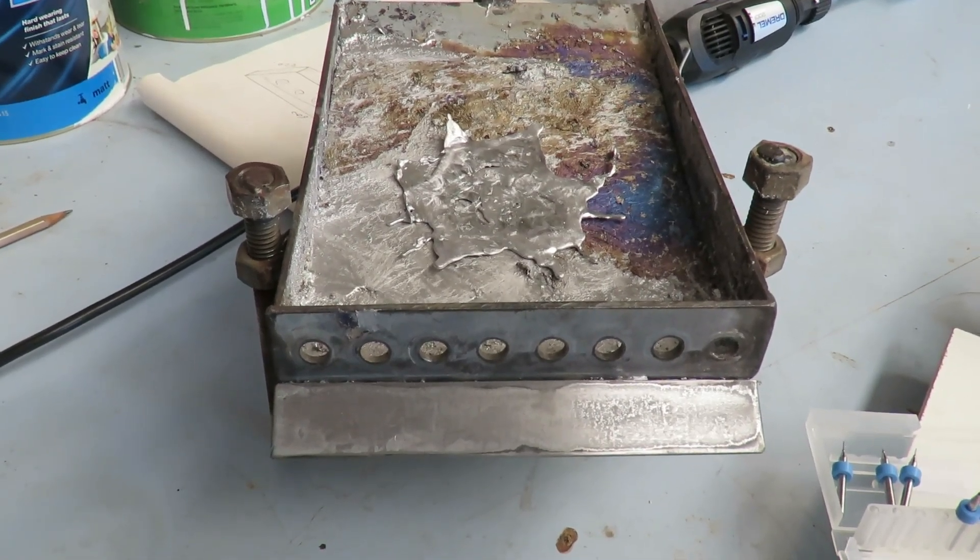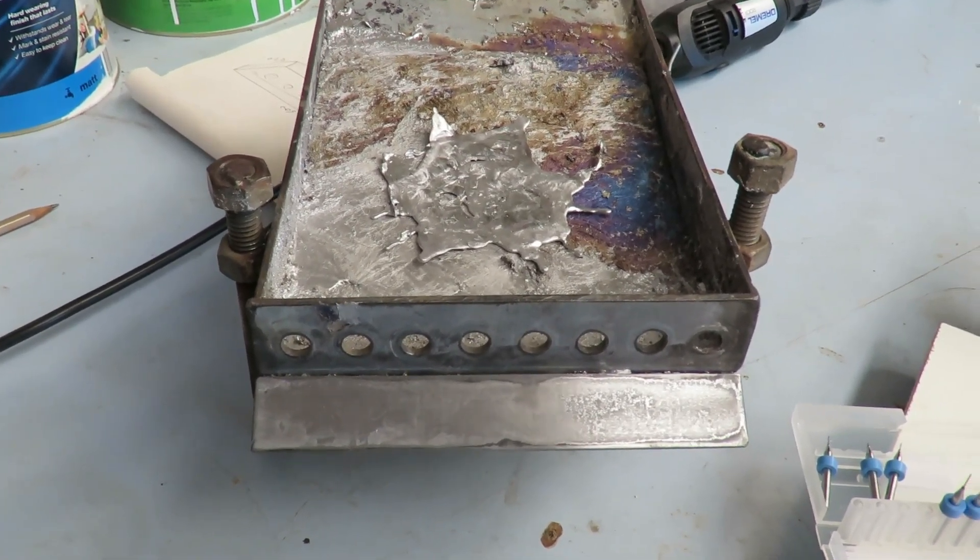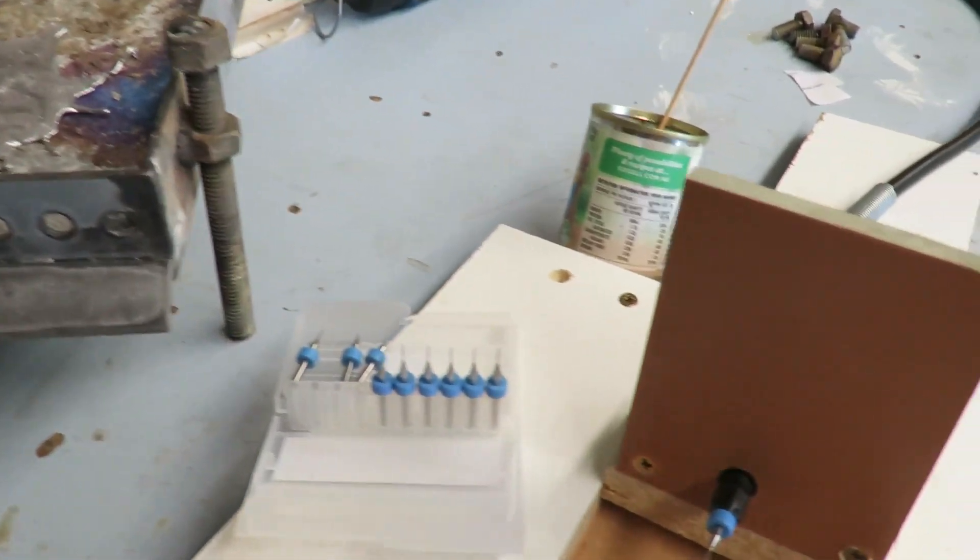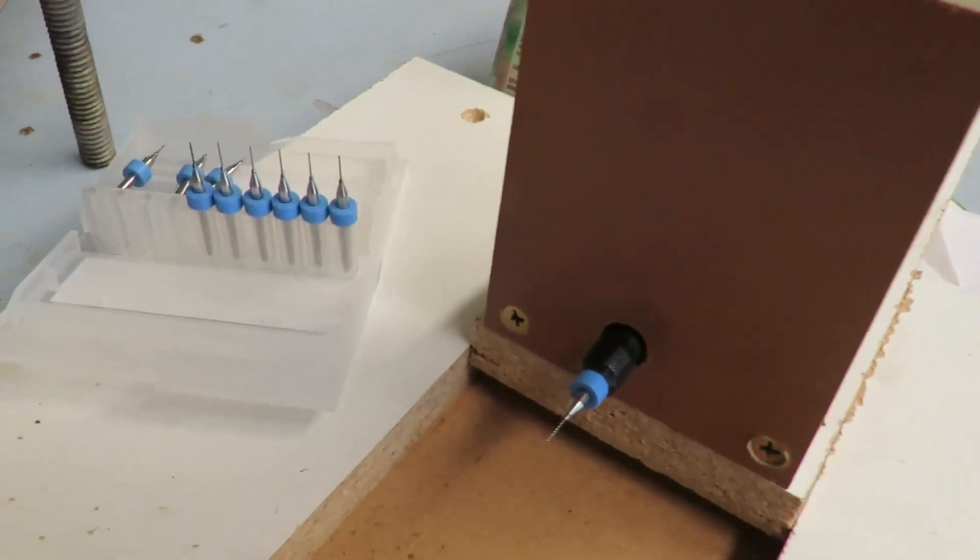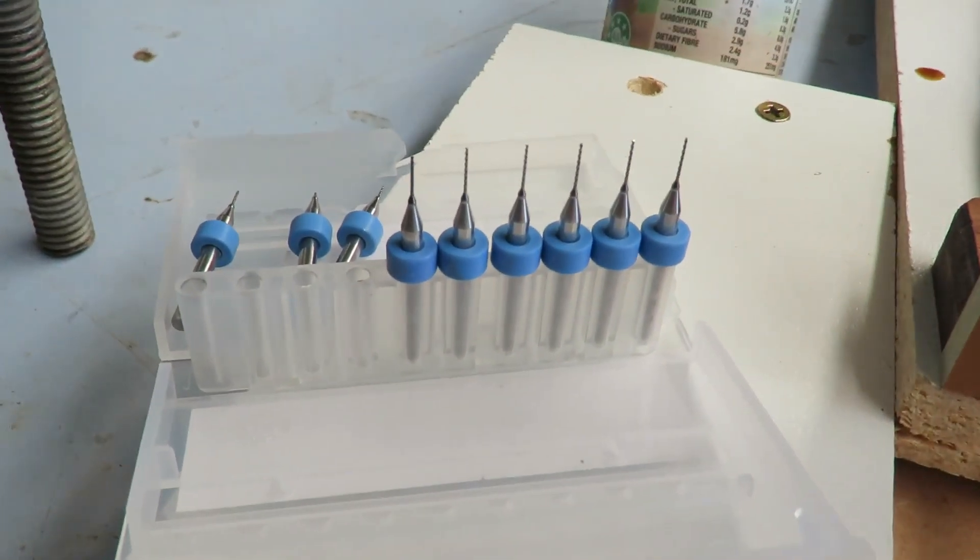I'm using a 0.5mm drill bit in my Dremel. You buy the drill bits off eBay.